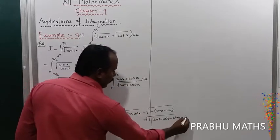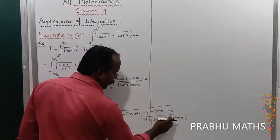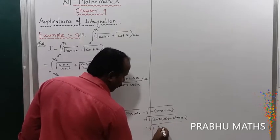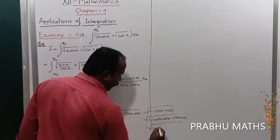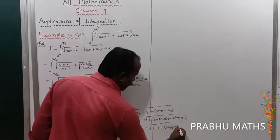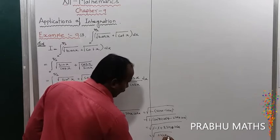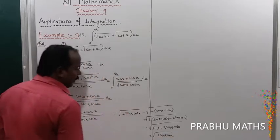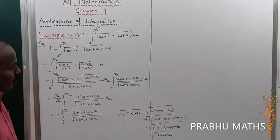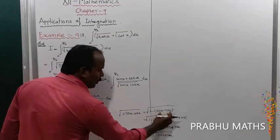Substituting inside: 1 − (sin²θ + cos²θ − 2 sin θ cos θ). Since sin²θ + cos²θ = 1, the −1 + 1 cancels, giving √(2 sin x cos x) in the denominator replaced by √(1 − (sin x − cos x)²).